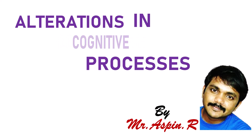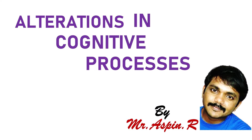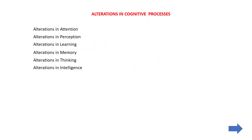We are going to see alterations in cognitive processes. Cognition includes attention, perception, learning, memory, thinking, and intelligence. If there is any deviation from normal cognition, that is called an alteration. So these are the things we are going to see now.